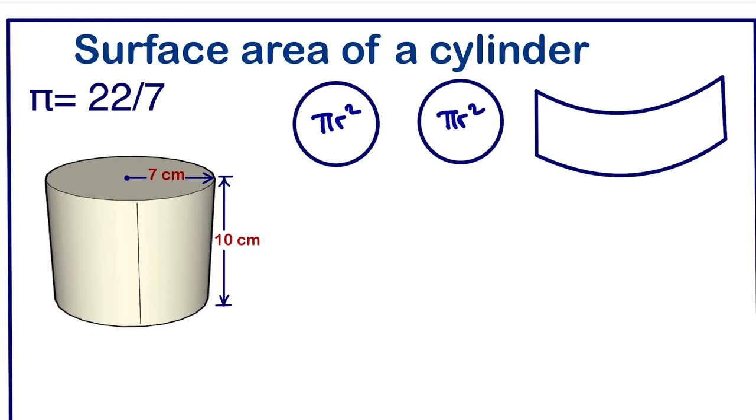So if we want to calculate the surface area, we can start by writing, we have two circles. This will be 2πr² plus...